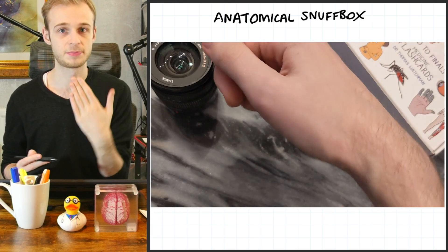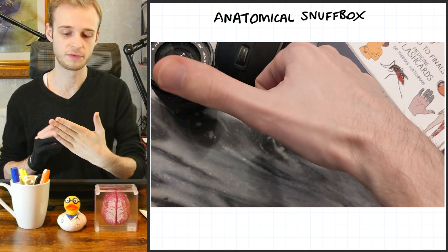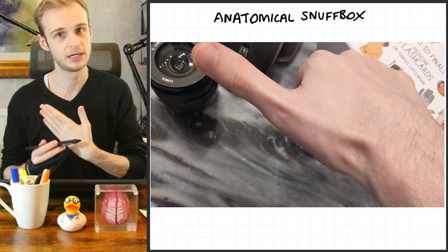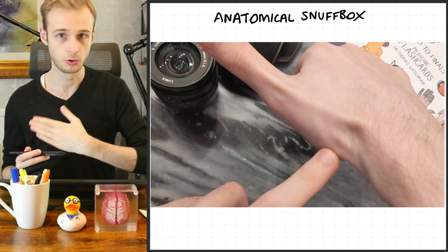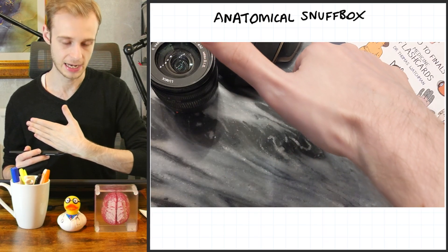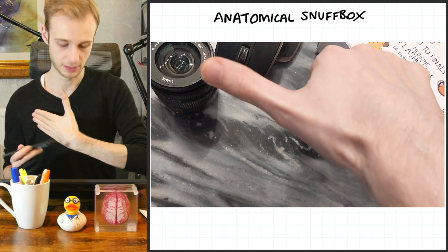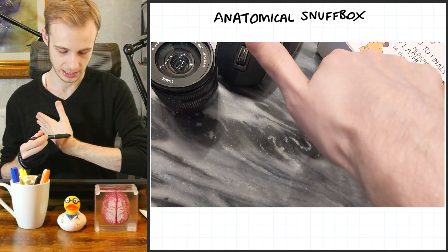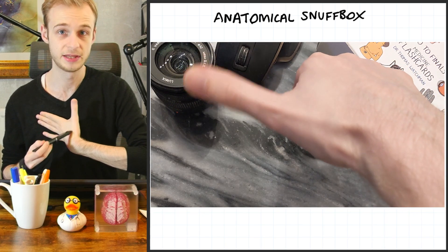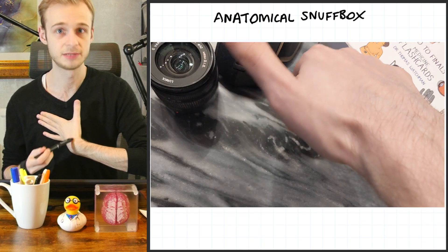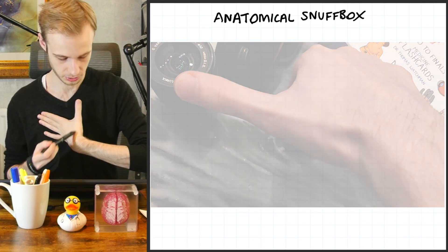Now, the easiest way to find it is by getting your hand into this position with your fingers outstretched and your thumb in its neutral position. And then all we're going to do is extend the thumb back as far as we're able to, and we'll actually see the anatomical snuff box pop up. And this is it, this little triangular depression, as we've said, in the lateral dorsum.